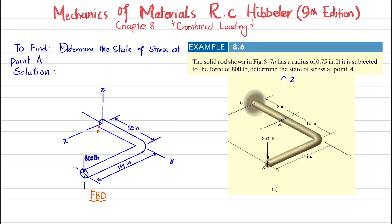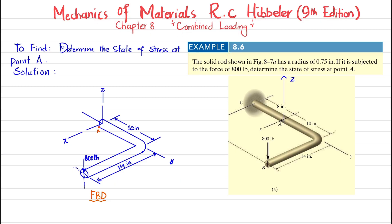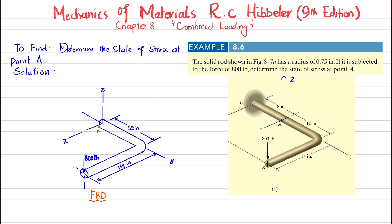Welcome back. In this video we are going to solve Example 8.6 taken from Chapter 8, Combined Loading, from the book Mechanics of Materials by R.C. Hibbeler, ninth edition. The problem statement is: a solid rod shown in Figure 8-7a has a radius of 0.75 inch. If it is subjected to a force of 800 pounds, determine the state of stress at point A.